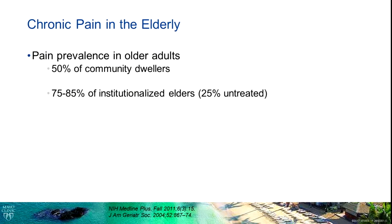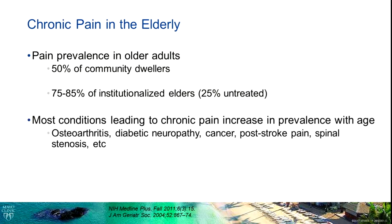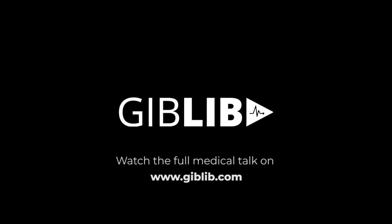A little more background on chronic pain in the elderly: it's common. Estimates suggest about 50 percent of older adults in the community have chronic pain of some sort, and that number is higher in institutionalized older adults where it becomes nearly universal. Importantly, that population is one where chronic pain is oftentimes completely unrecognized and untreated. Many of the conditions we associate with chronic pain risk become more prevalent with advancing age, and we know pain has a lot of consequences.